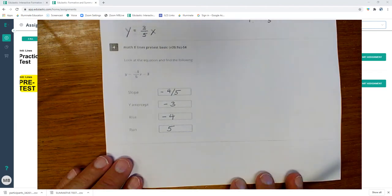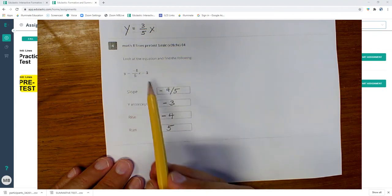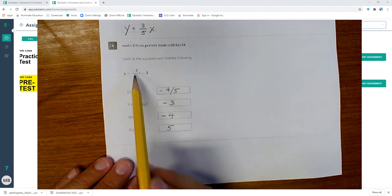Look at this guy and tell me the slope. The slope of this is negative four over five. The y-intercept is right here at negative three. The rise is negative four, it's actually a fall, and the run is five.